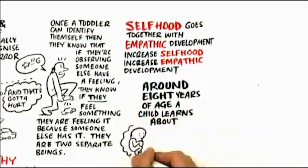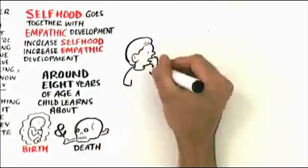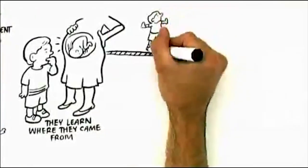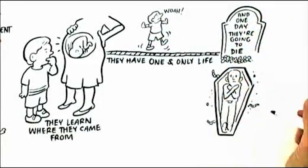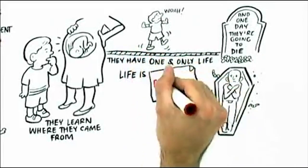Around eight years of age, a child learns about birth and death. They learn where they came from, that they have a one and only life, that life is fragile and vulnerable, and one day they're going to die.